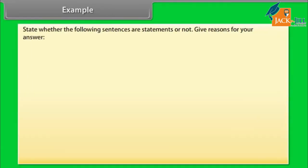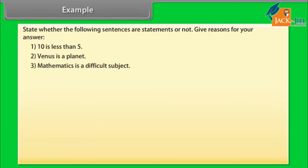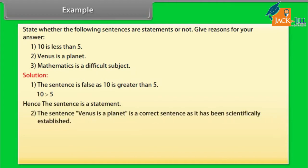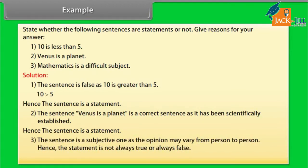Example: State whether the following sentences are statements or not, and give reasons for your answer. (1) 10 is less than 5. (2) Venus is a planet. (3) Mathematics is a difficult subject. Solution: The sentence '10 is less than 5' is false, as 10 is greater than 5. Hence, the sentence is a statement. 'Venus is a planet' is a correct sentence, as it has been scientifically established. Hence, it is a statement. 'Mathematics is a difficult subject' is subjective, as the opinion may vary from person to person. Hence, it is not always true or always false, so the sentence is not a statement.